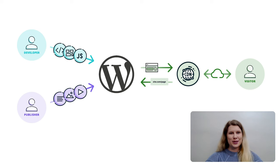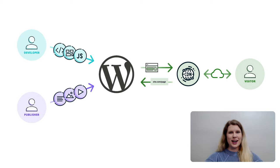Traditionally, a content management system such as WordPress would handle both the front end and the back end of the website. A publisher creates and manages content, such as blog posts and pages, inside of WordPress. A developer writes code to control how the site looks and functions using PHP and WordPress's theme API.